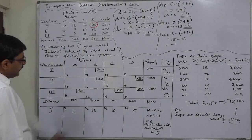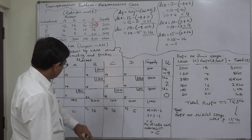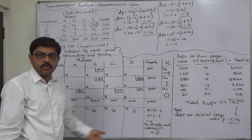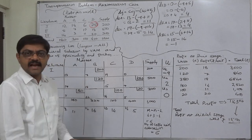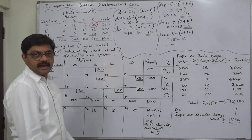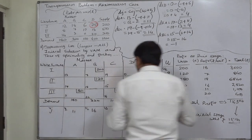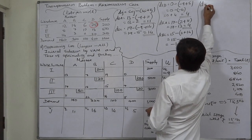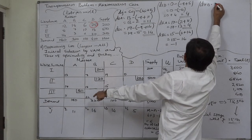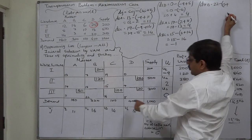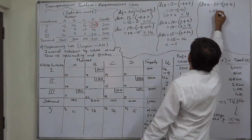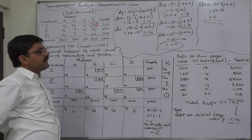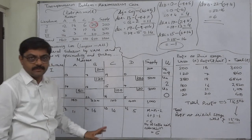Although we have a negative dij value, we must calculate for all empty cells. If there are two or more empty cells with negative dij values, we select the one with the greatest negative magnitude to start the closed loop. For d3b: c is 22, ui is 0, vj is 16, so 22 minus 16 = 6, positive. Only d2c is negative, so the modified solution is also not optimal.